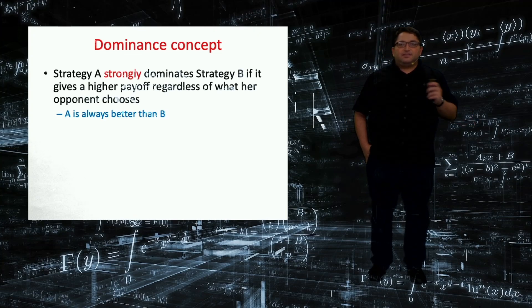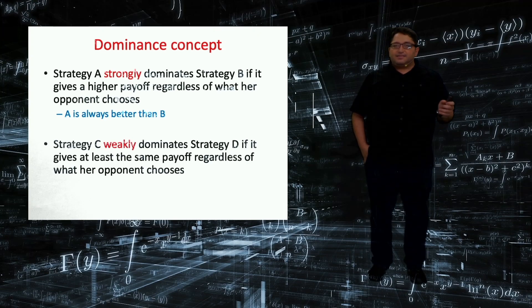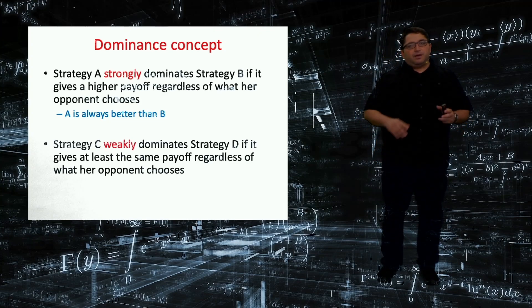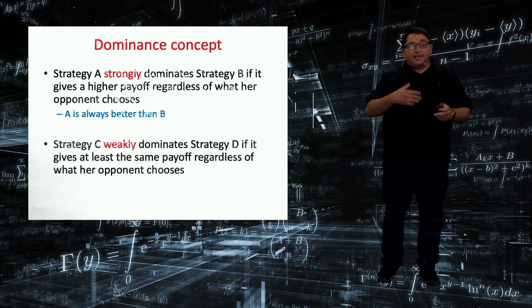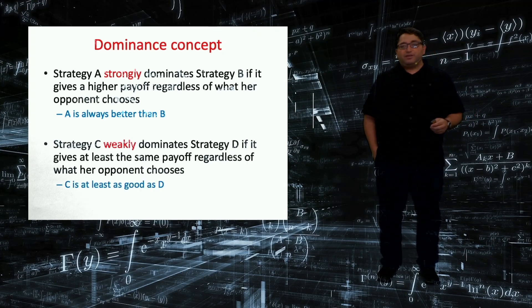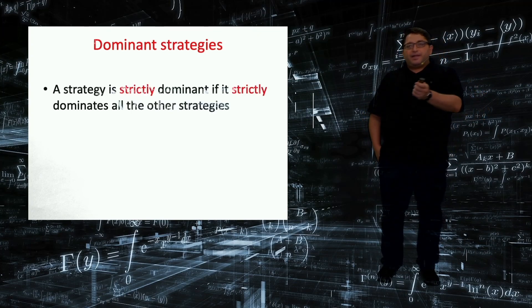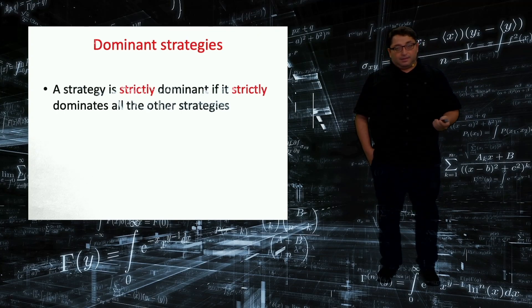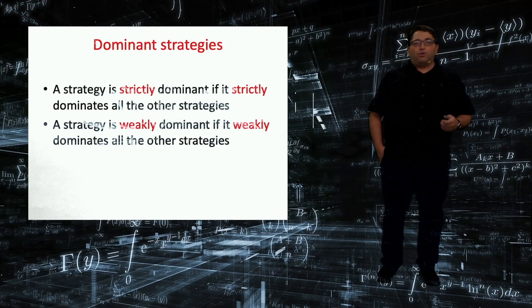And we can introduce the sister concept, which I call weak domination. Here strategy A is never worse than strategy B. In some cases, depending on the action of the other player, in some cases, I can get the same payoff. But in other cases, my payoff is higher. So A is at least as good as B. And if a strategy A strictly dominates all the other strategies, then we call strategy A strictly dominant. And similarly, a strategy is weakly dominant if it weakly dominates all the other strategies.